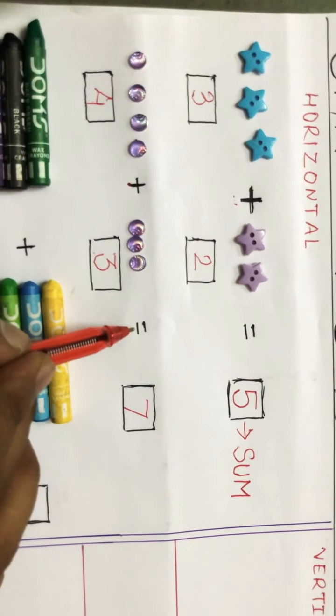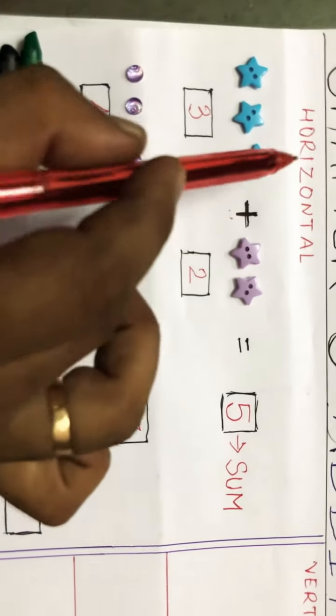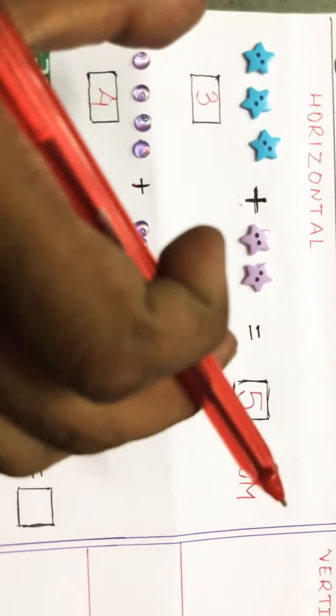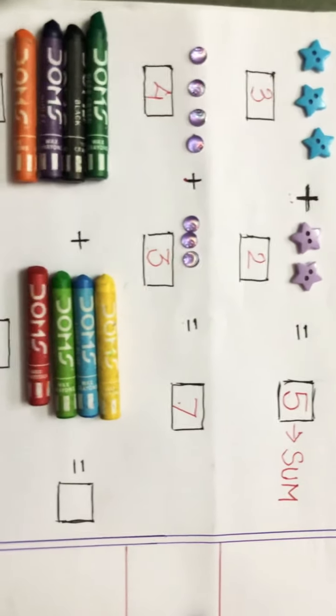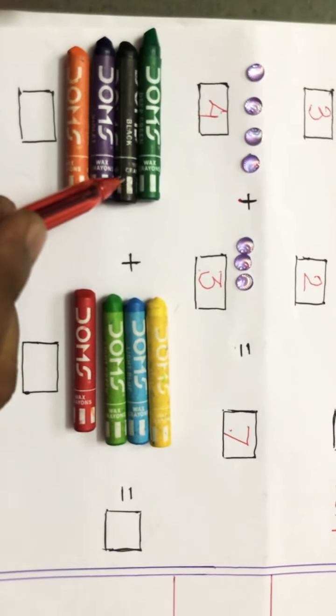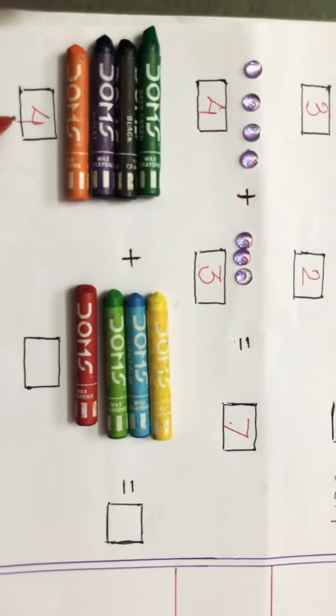So four plus three, this is called equal to seven. This is called horizontal addition, which is sleeping. Now again see one more. How many crayons are here? One, two, three, and four.